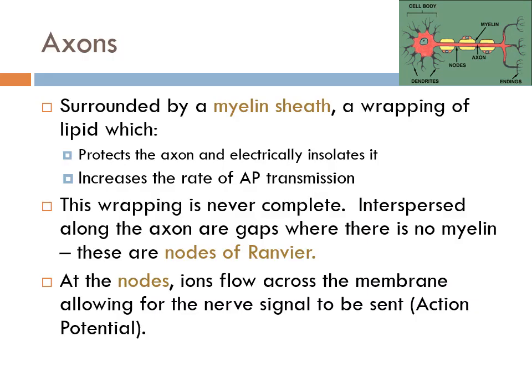After the signal passes from the cell body, it moves on to the axon. Axons are surrounded by myelin sheath, which is a wrapping of fats or lipids. It does two things for the neuron: it protects the axon and it insulates it — just like electrical wires have plastic covering the metal wire to keep the signal inside. The myelin sheath also increases the rate of action potential transmission, making the signal move through the neuron faster, which is ideal especially when you're talking about reflexes — you need those reflexes to be pretty quick.